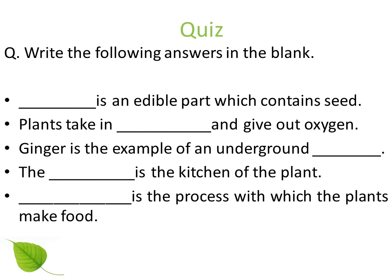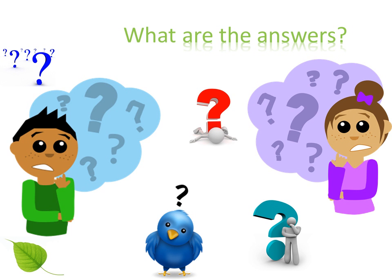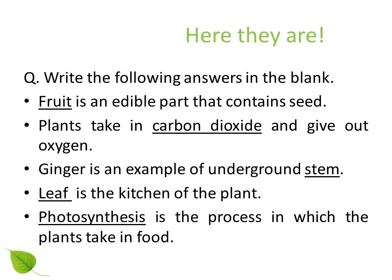Quiz: Write the following answers in the blanks. Blank is an edible part which contains seed. Plants take in blank and give out oxygen. Ginger is an example of an underground blank. Blank is the kitchen of the plant. Blank is the process with which plants make food. What are the answers?